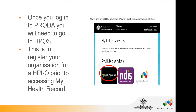If you want to register an organisation for My Health Record access, you currently need to be the owner of the business or the principal health practitioner within that practice to do this yourself via PRODA. If you work for an organisation that's not yet registered and you're not the owner or principal, consider having a chat with the owner about getting the organisation registered. If you need any help, please give us an email or a call.